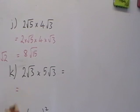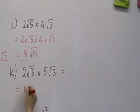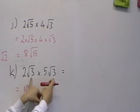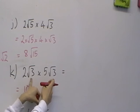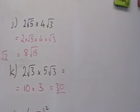Okay. We've got the 2 multiplied by the 5, which gives us the 10. And then the root 3 multiplied by root 3 is the same as root 3 squared, which is just 3. So this time we get the answer of 30. So there is no surd in the answer.